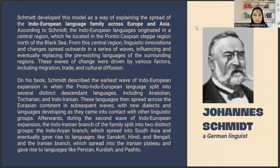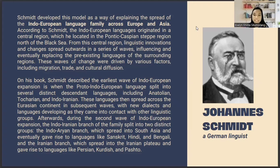Smith developed this model as a way of explaining the spread of the Indo-European language family across Europe and Asia. In his book, he described the earliest wave of Indo-European expansion as when the proto-Indo-European language split into several distinct groups. The Indo-Iranian branch spread into South Asia, giving rise to languages like Sanskrit and Hindi, while another branch spread into the Iranian plateau and gave rise to languages like Persian, Kurdish, and Pashto.